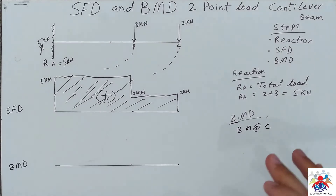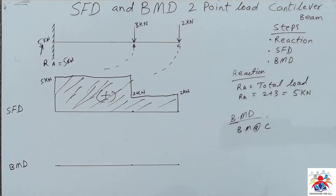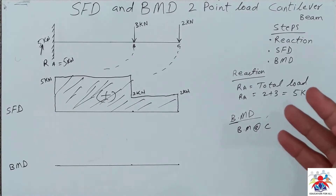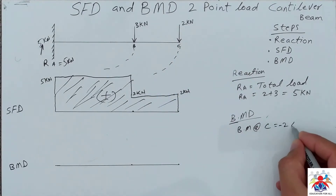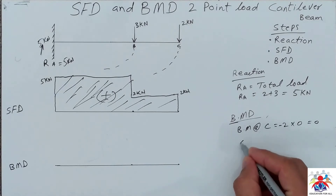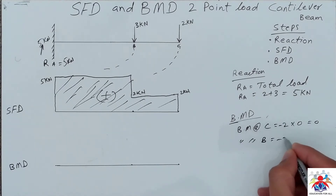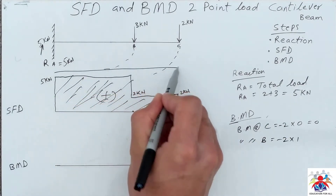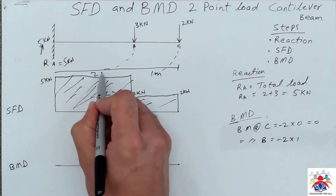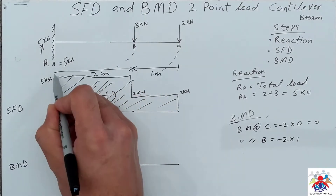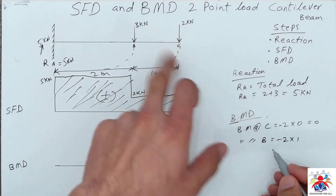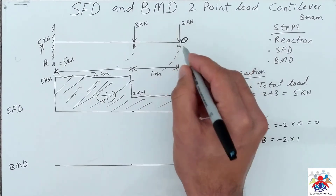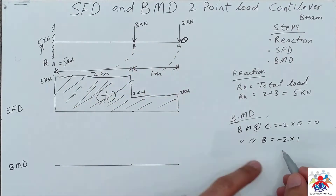We can also calculate from point A, but ultimately the diagram would be the same — one diagram would be in the positive zone and the other in the negative zone. We are going to do the diagram in the negative zone. I forgot to draw the length of the beam: it's 1 meter here and 2 meters here, so the total length is 3 meters. Bending moment at point C is minus 2 multiplied by zero, which is zero.